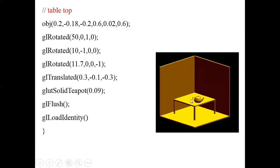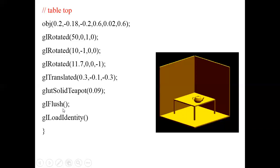To place the teapot in the center, I perform three rotations again, then translation, and then draw the teapot using glutSolidTeapot with 0.09 as the size — specifying the diameter. If you give a larger value, the teapot will be bigger. Instead of a solid teapot, you can also draw a wired teapot using the built-in function glutWireTeapot. If in an exam they ask you to draw a cone instead, you can use glutSolidCone or glutWireCone and place it on the table. GL_Flush forces the activation of all OpenGL functions.